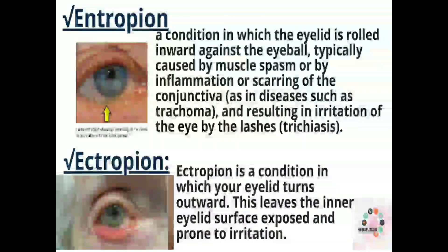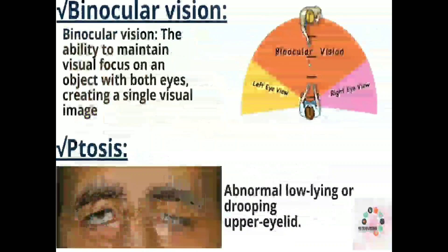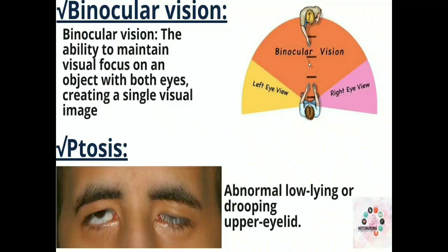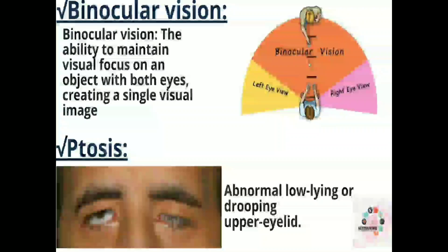Next is ectropion — a condition in which your eyelid turns outward, as you can see in the picture. This leaves the inner eyelid surface exposed and prone to irritation. Next we have binocular vision, which means the ability to maintain visual focus on an object with both eyes, creating a single visual image.